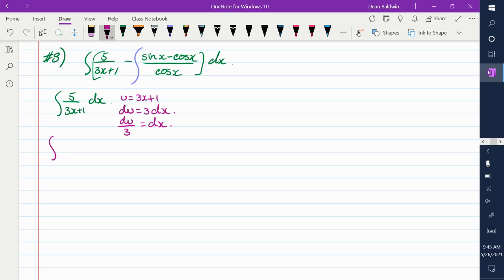So that integral now becomes, I can pull the five out. One over u. Du over three. What else can I pull out? One third. So it's five over three, integral of one over u du, which is natural log of the absolute value. So it's five thirds natural log absolute value of u. And u was three x plus one. So that one's done. We just put that off to the side.